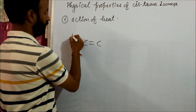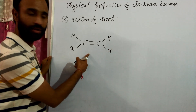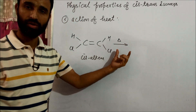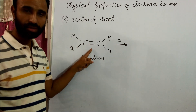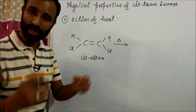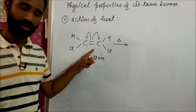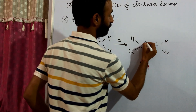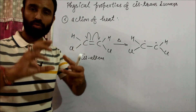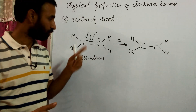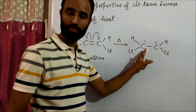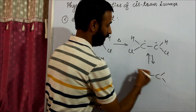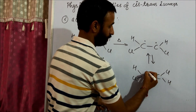Now, action of heat. Let us take cis alkene and heat it. The pi bond is weaker than the sigma bond because of weak sideways overlapping. So the pi bond breaks homolytically and we get a diradical. When there is a double bond, there is restricted rotation, but when the double bond breaks, we get a single bond which can rotate easily.